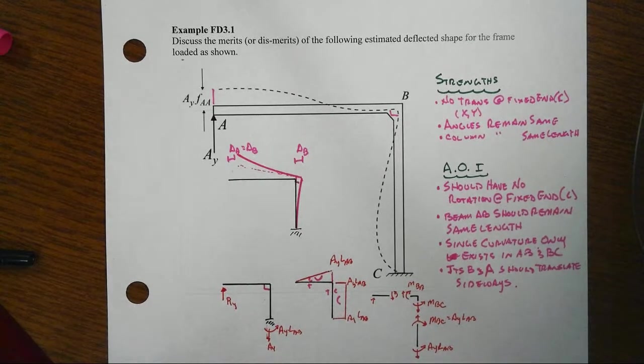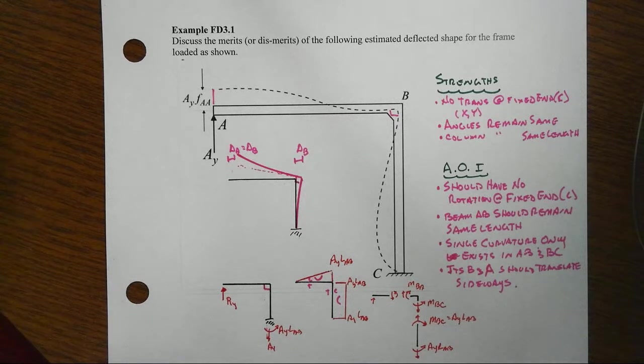And note also this points out that we should have a translation that joints B and A should translate sideways, and they don't. So there's a lot of areas of improvement here that need to go on to make this ready for calculations.